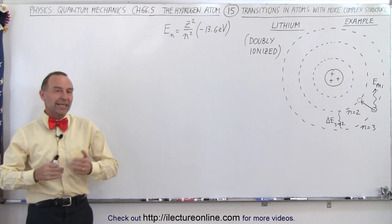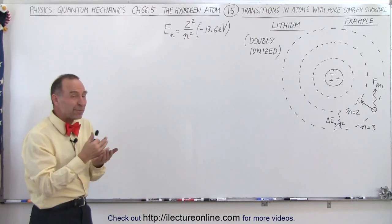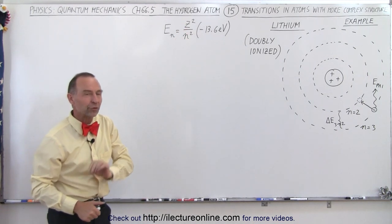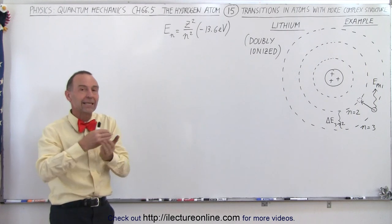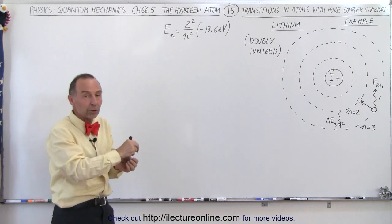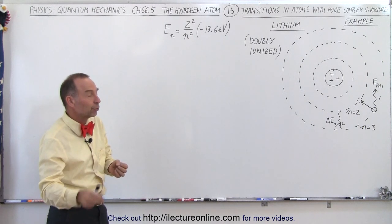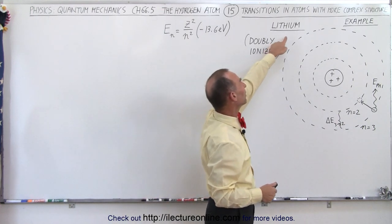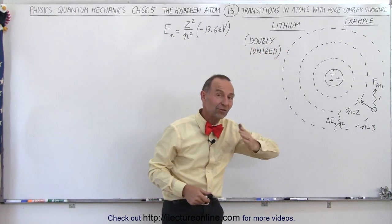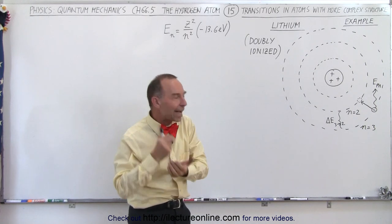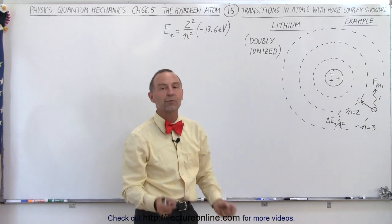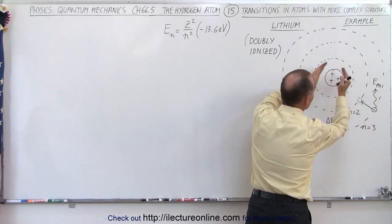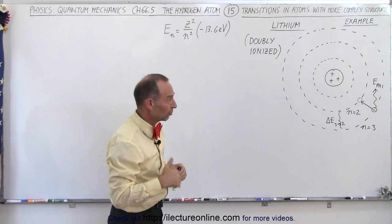Welcome to our lecture online. Here we're going to see how we can use the same equation with the one difference that we include the atomic number squared, as we had used for hydrogen, to calculate the wavelength of the photon that's either emitted or absorbed when an electron jumps from one level to another in a more complex atom. In this case we're going to use the lithium atom, and of course we need to make sure that we understand that this must be a doubly ionized lithium atom where two of the electrons are removed and there's only one electron remaining, so we have the singular interaction between the electron and the nucleus for this equation to work.